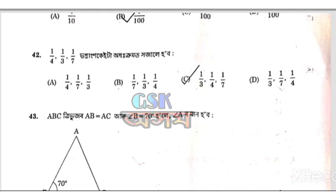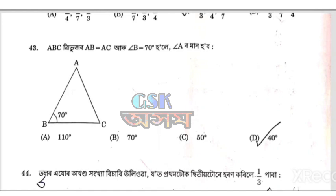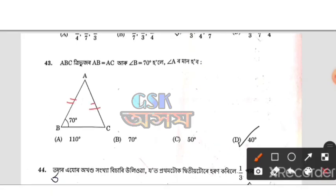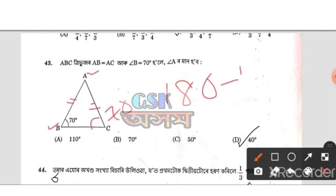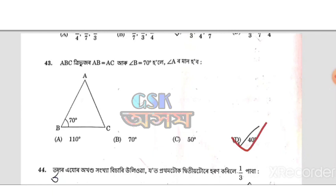Question 43: Triangle ABC where AB equals AC. Angle B is 70 degrees. Angle B is 40 degrees, Angle A is 40 degrees.